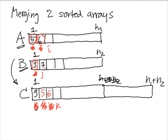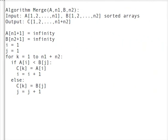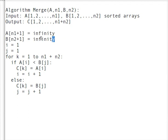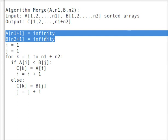So the algorithm can be written in pseudocode like this. You have two sorted arrays. This is a nice trick. Usually when you write merge procedure, you have to be careful not to overflow one of the arrays.